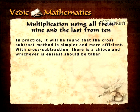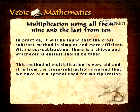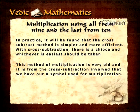In practice it will be found that the cross subtraction method is simpler and more efficient. With cross subtraction there is a choice and whichever is easiest should be taken. This method of multiplication is very old and it is from the cross subtraction involved that we have our cross symbol used for multiplication.